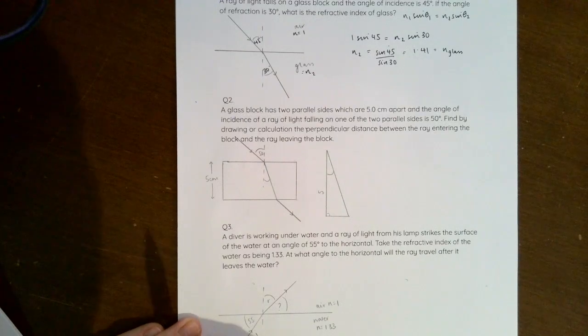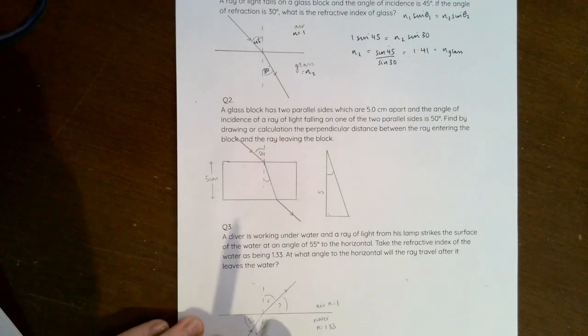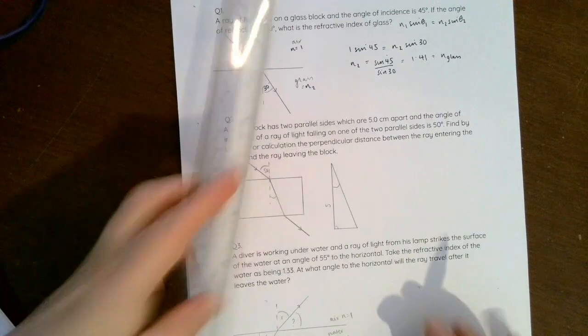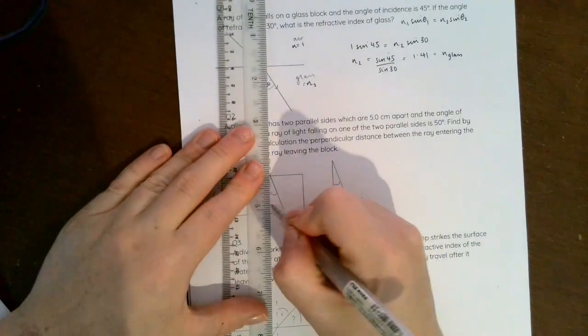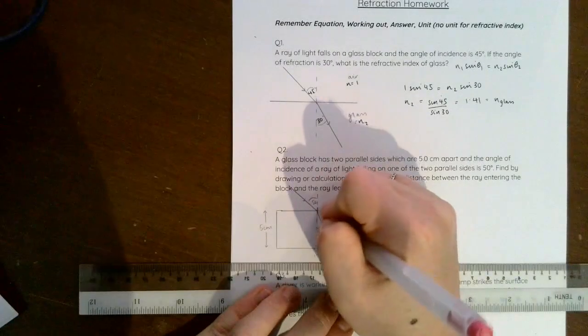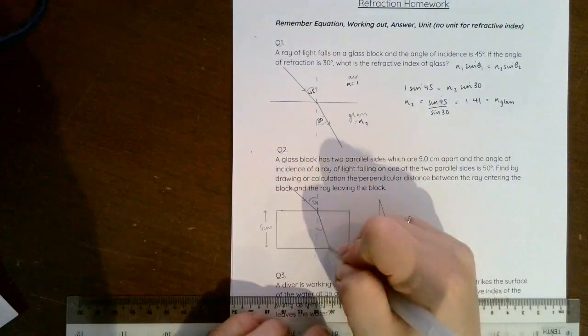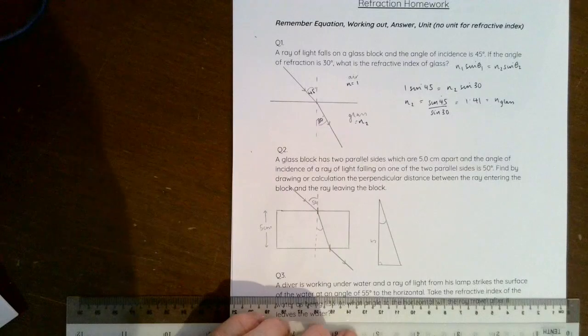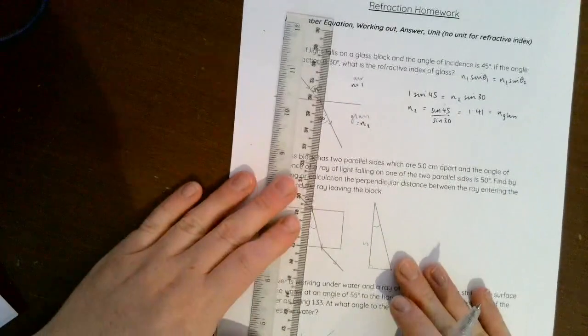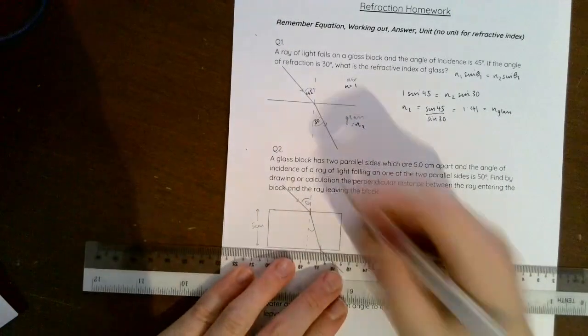It says find by drawing or calculation the perpendicular distance between the ray entering and leaving the block. So the distance that we actually are being asked to find, if I extend that normal line down, it entered here and it left somewhere over here.